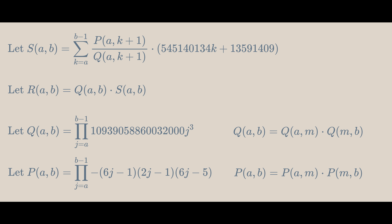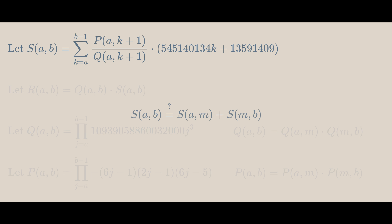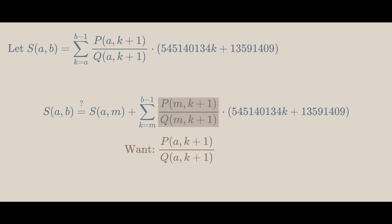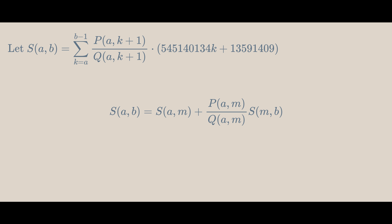Now, let's try find S(a,b) in terms of S(a,m) and S(m,b). If we try S(a,m) plus S(m,b), we'll see that S(m,b) will be missing P(a,m) over Q(a,m) in every term. So, we get that S(a,b) equals S(a,m) plus P(a,m) over Q(a,m) times S(m,b).